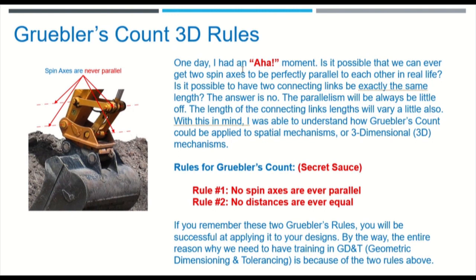Rule number one is no spin axes are ever parallel, and rule number two, no distances are ever equal between linkages and the remaining parts, and this is very crucial to diagnose mechanisms and make sure that Gruebler's Count 3D works 100% of the time.